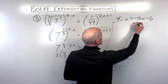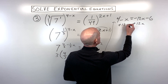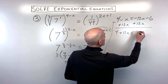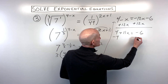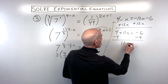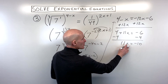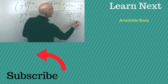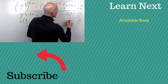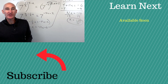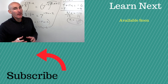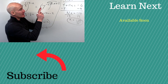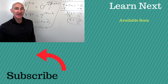Adding twelve x to both sides gives four plus eleven x equals negative six. Subtracting four from both sides gives eleven x equals negative ten. Dividing both sides by eleven, x comes out to negative ten elevenths. If you enjoyed this video and want to see more examples where you can't get the bases to be the same, go ahead and follow me over to that video and we'll do more practice solving exponential equations.